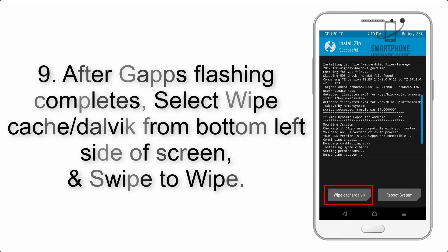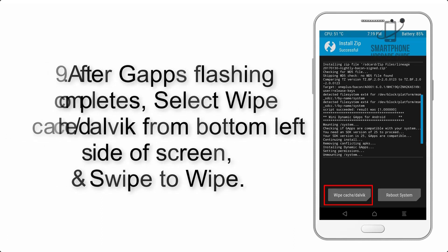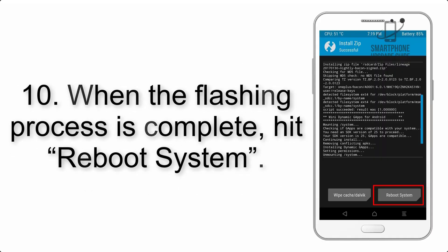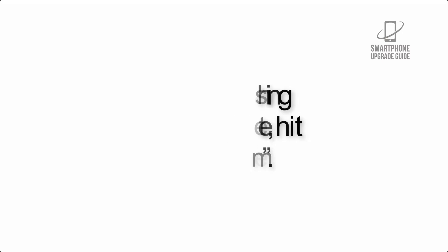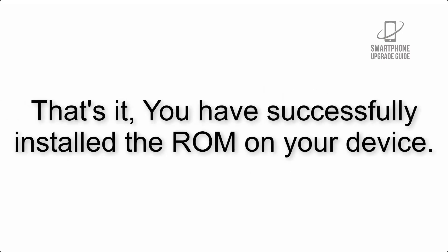Step 8: Flash the GApps zip package in the same manner. Step 9: After GApps flashing completes, select Wipe Cache and Dalvik from the bottom left side of the screen and swipe to wipe. Step 10: When the flashing process is complete, hit Reboot System. That's it — you have successfully installed the ROM on your device.